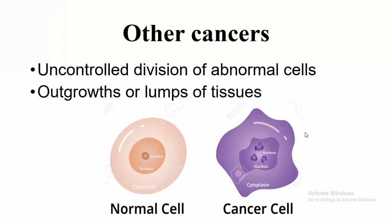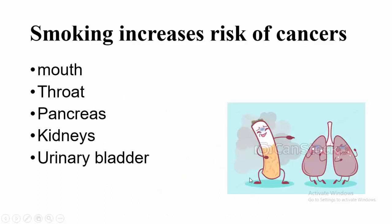So what are the other cancers? Uncontrolled division of abnormal cells with outgrowth or lumps of tissues. We can clearly distinguish the normal cell from the cancerous cell. Smoking increases risk of cancers of the mouth, throat, pancreas, kidneys, and urinary bladder.